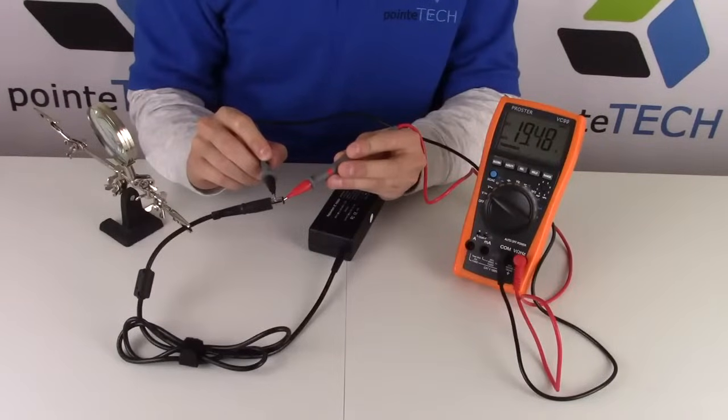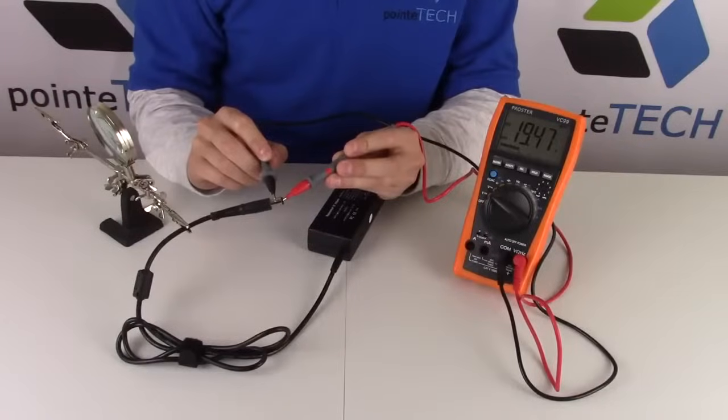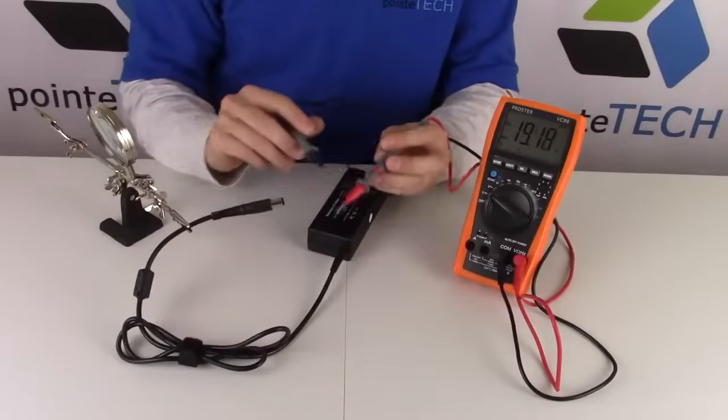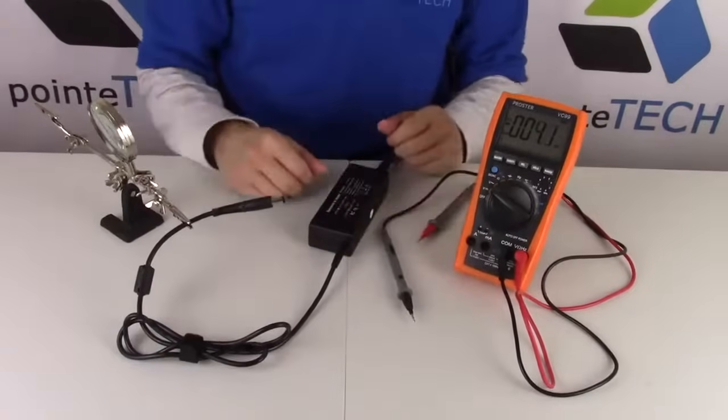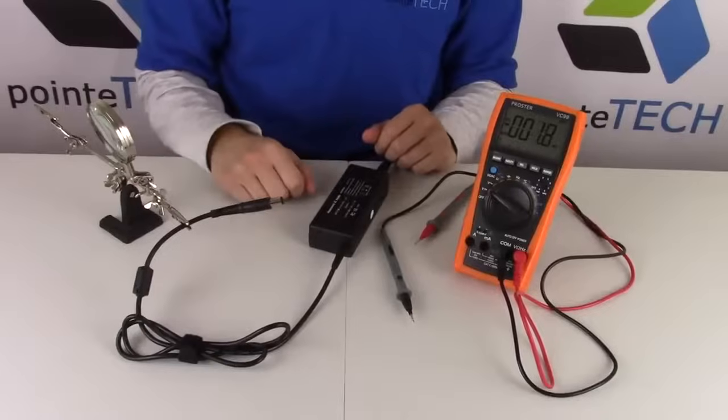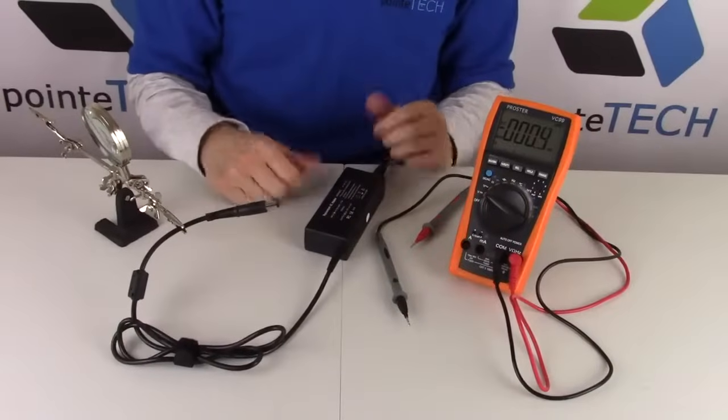As you can see, the multimeter is reading about 19 volts. There is a little margin of error, and that's well within. So what that means is, this charger is taking power in from your wall outlet, and it's putting out 19 volts, what it says it's putting out. So we know this charger is good.